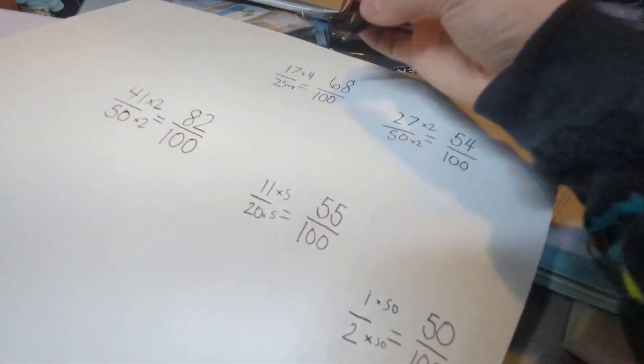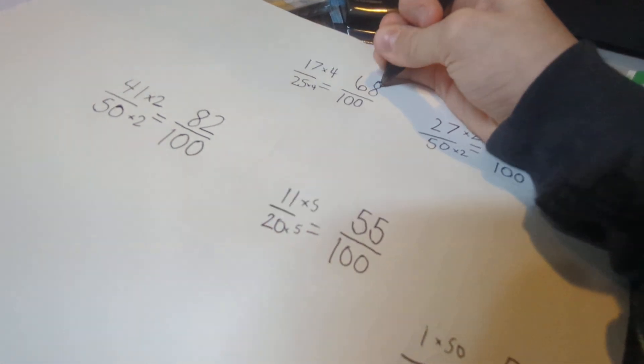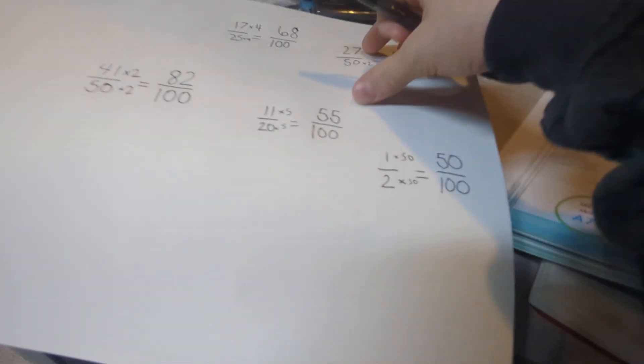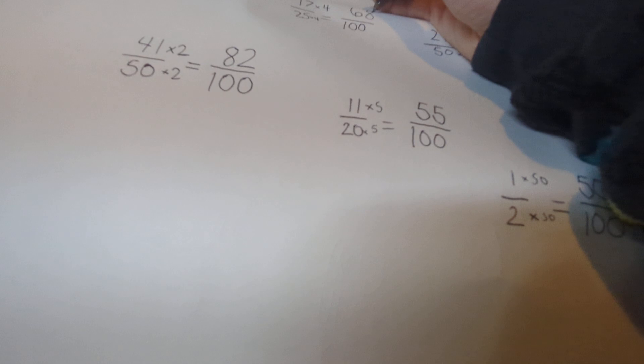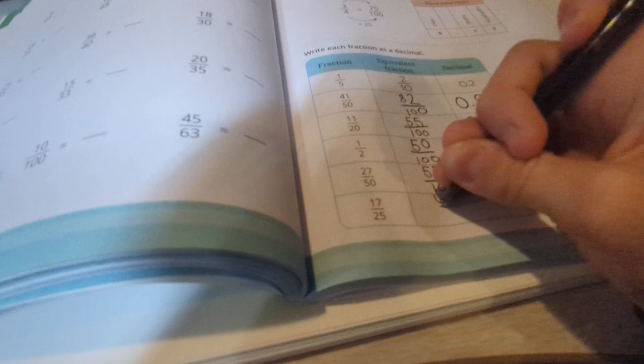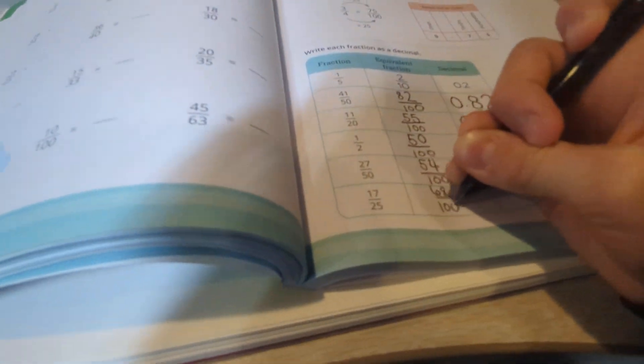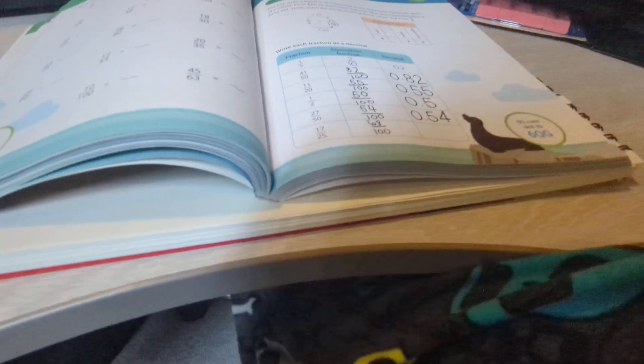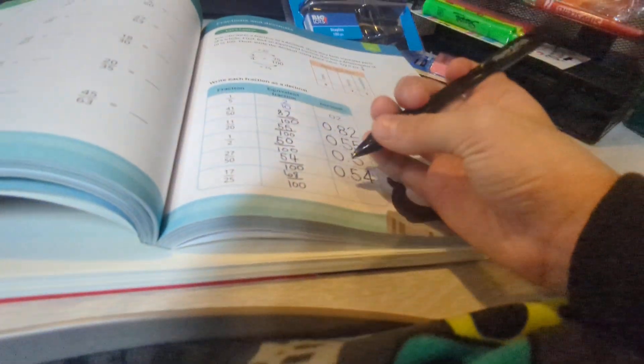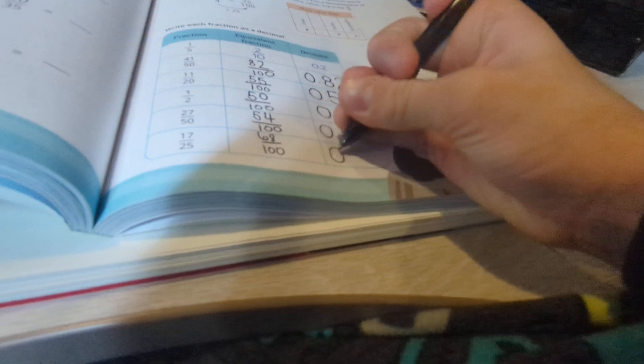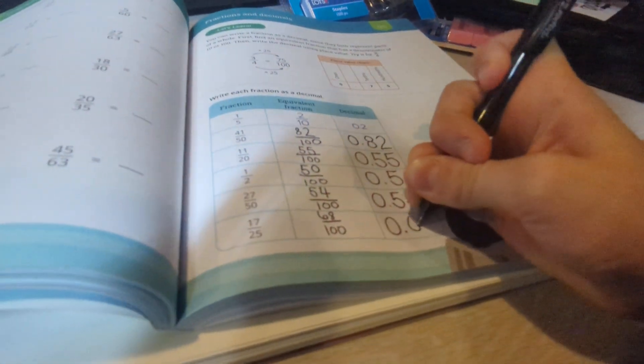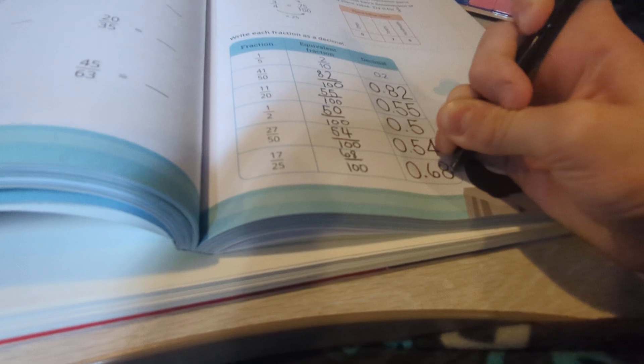So you got 68 hundredths as your answer. So now I'm going to write that down. 68 hundredths. This is how I line mine up. So the answer is 0.68 for this one.